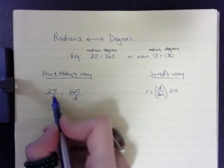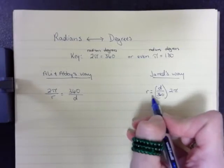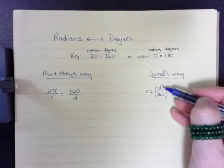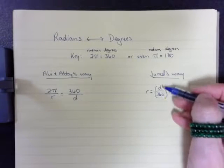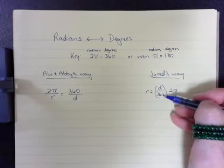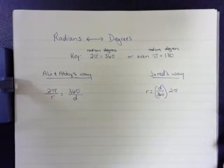If I do the math on this proportion, I get what Jared's way was. Upon closer inspection of Jared's, we realized that he got this fraction incorrect. So we have to remember that the degree goes above the 360 in order to find the radians.